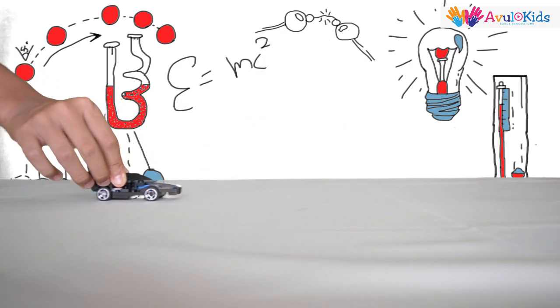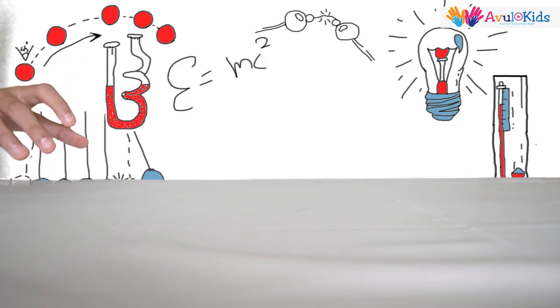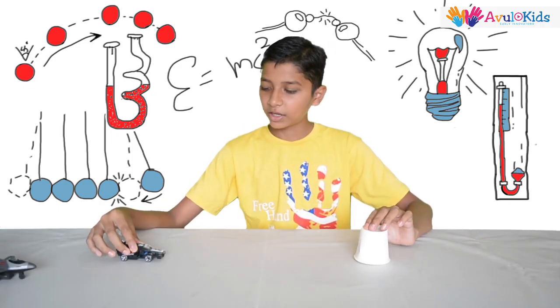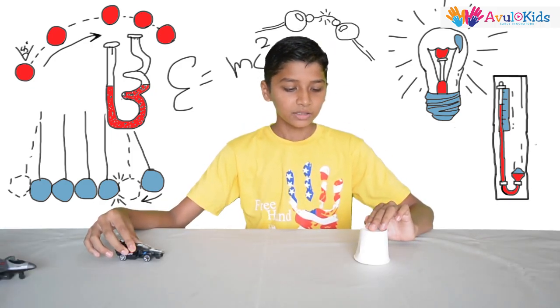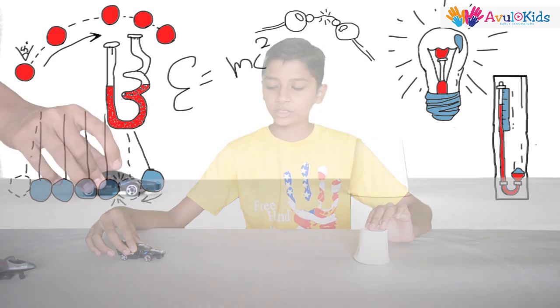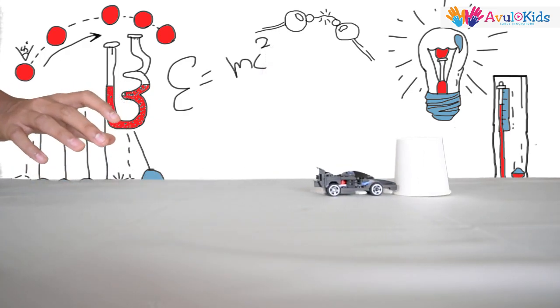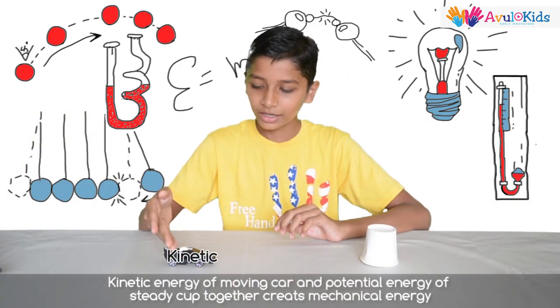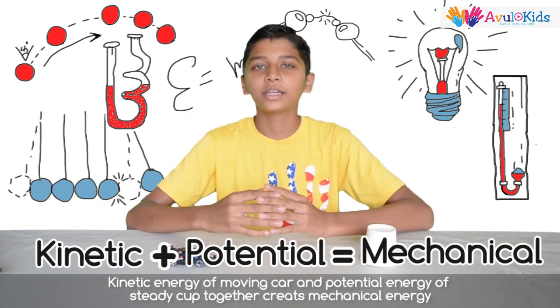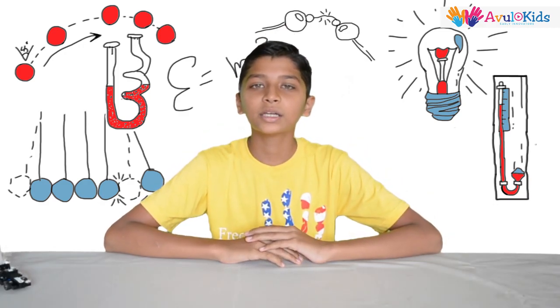When I push this car back, it has got potential energy, and when I leave it, it is in motion, so it has got kinetic energy. Now my car in motion will have kinetic energy, and this paper cup is in steady state, means it has got potential energy. When the car hits the cup, it generates mechanical energy. Kinetic energy of a moving car and potential energy of a steady cup together creates mechanical energy.